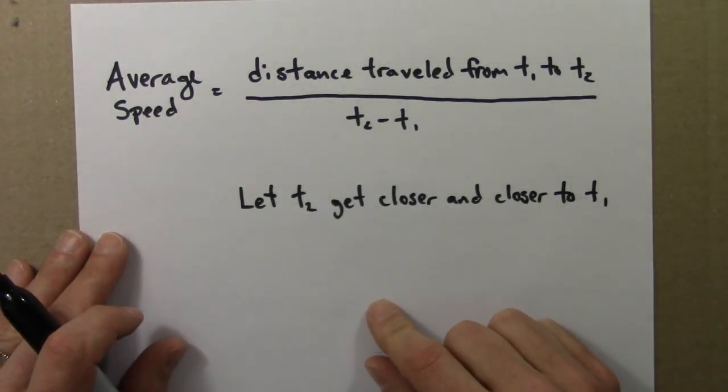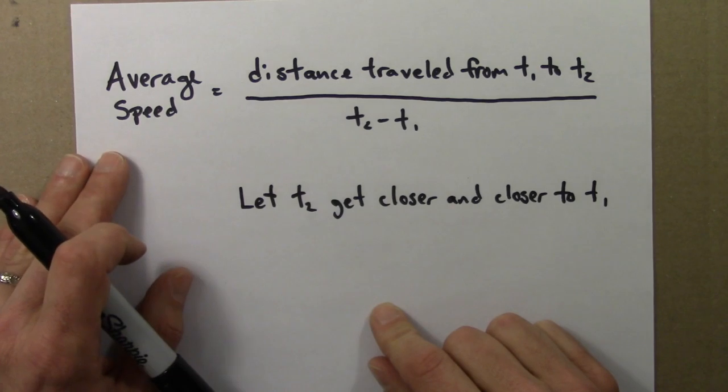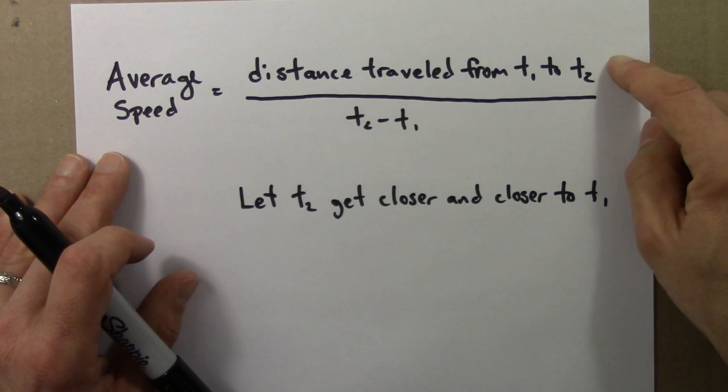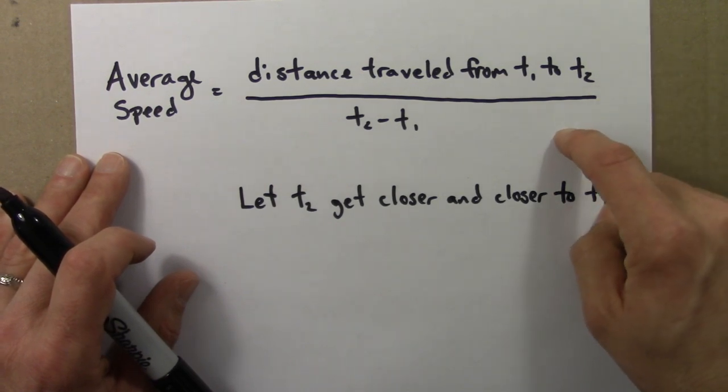Let me now define the derivative a little bit more formally. Returning to the example we started with, average speed from time 1 to time 2 is the distance traveled during that time interval divided by the time interval itself.